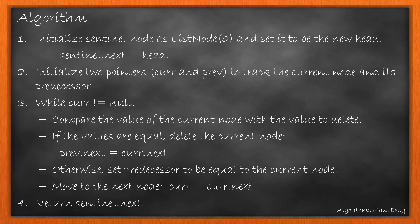Let's revisit what we did. We initialized sentinel node as list node 0 and set it to be the new head. Then we initialized two pointers, current and previous, to track the current node and its predecessor. We then looped while current is not equal to null and compared the value of current node with the value to be deleted.